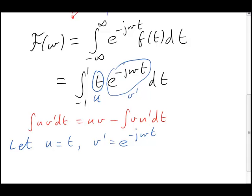So there are my two choices. u equals t, and v primed equals the exponential. Once we've made those choices, the other two items needed, that's u primed and v, are forced on us.